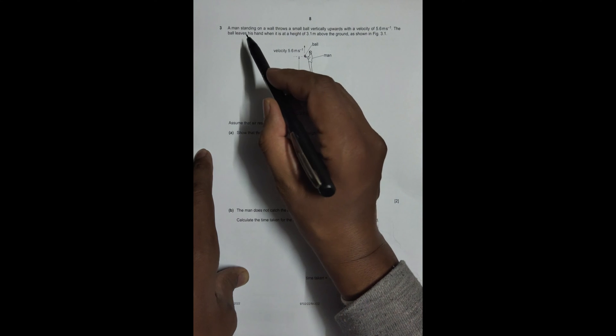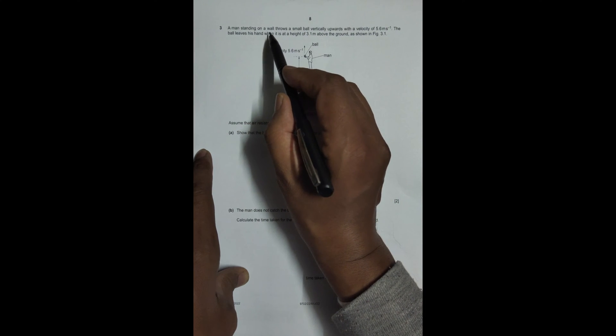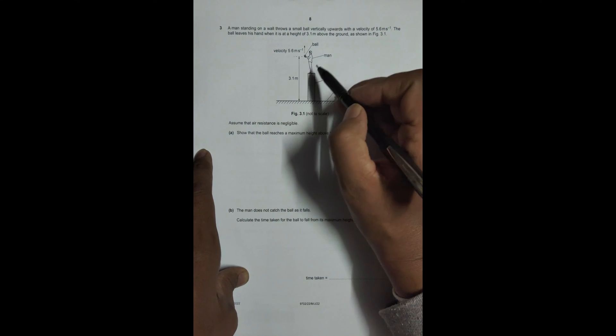Hello folks, this is 2022 major paper 22, question number 3. This question is concerned with chapter kinematics. As shown by the figure, it says a man standing on a wall throws a small ball vertically upward with a velocity of 5.6 meters per second. So there's a person, he throws the ball like this.